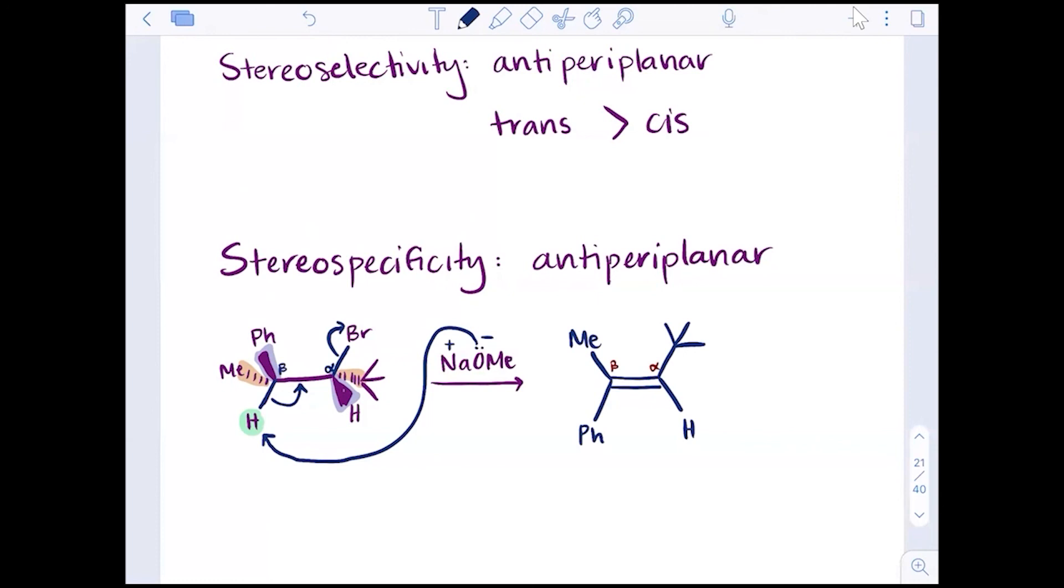It is locking our alkyl halide in a specific conformation. That conformation is the anti-periplanar. So there's going to be a specific alkene that we can make for each hydrogen that we can deprotonate. So for this one, we will only make the E isomer. The Z is not observed because there is no hydrogen that would be anti-periplanar to the halogen leaving group in the Z conformation.